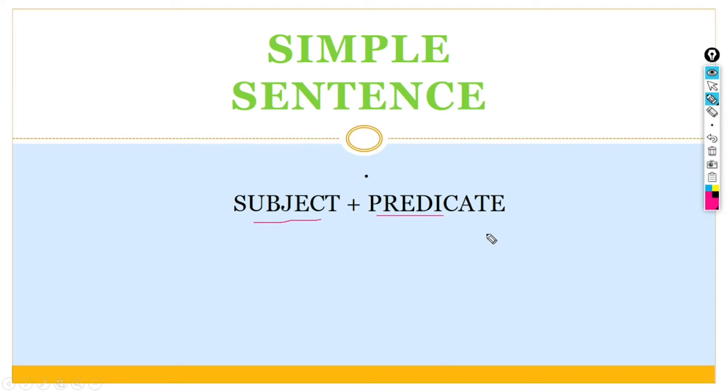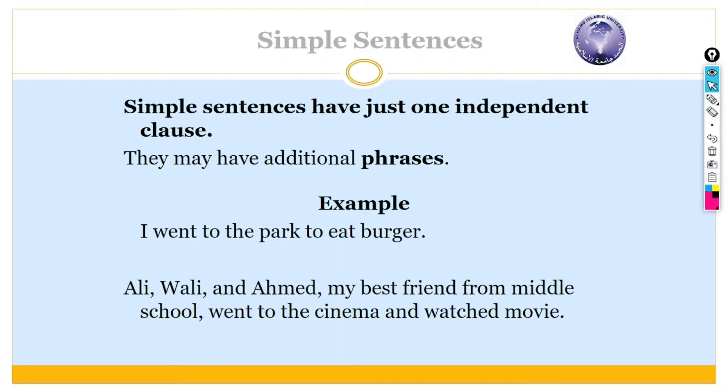Then, simple sentence has a subject and predicate. Have just one independent clause, they may have additional phrases. Example: I went to the park to eat burger. And there is another example, Ali, Wali and Ahmed, my best friend from middle school, went to the cinema and watched the movie. In this sentence, my best friend from middle school is the additional phrase. So, we can also use the additional phrase in the simple sentence.